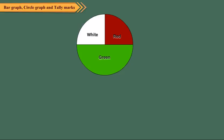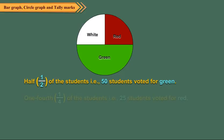A public school is thinking about changing the color of the boys' shirts. The pie chart shows the color 100 boys voted for. We can interpret the pie graph as given here. Half of the students, i.e., 50 students, voted for green. One-fourth of the students, i.e., 25 students, voted for red.